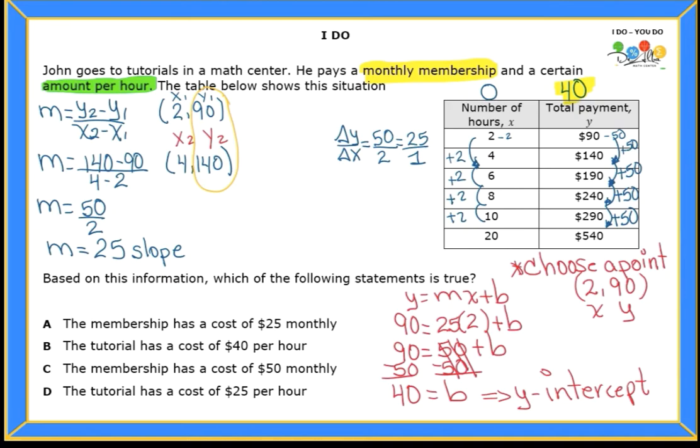Okay, so let's write down the equation. I'm going to write down Y equals MX plus B. And I will replace M with a 25. And I will replace B with a 40. So what does that mean? Well, that 25 means how much money he pays per hour. And 40 is actually the monthly membership. Very good. Let me write it down.